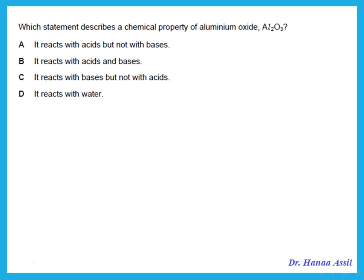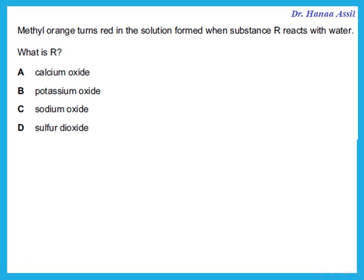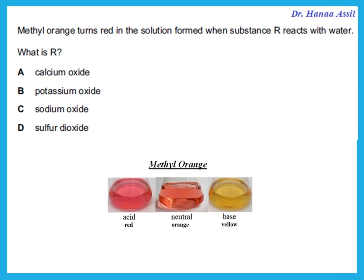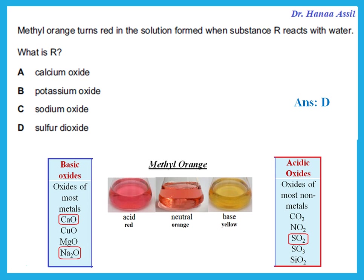Which statement describes the chemical property of aluminium oxide? Aluminium oxide is amphoteric, so it reacts with acids and bases. Methyl orange turns red in the solution formed when substance R reacts with water — methyl orange turns red if the solution is acidic. That means R forms an acidic oxide. The acidic one here is sulfur dioxide; the others — calcium oxide, sodium oxide, potassium oxide — are all basic. So the answer is D.